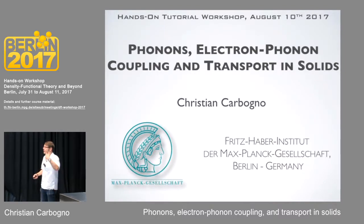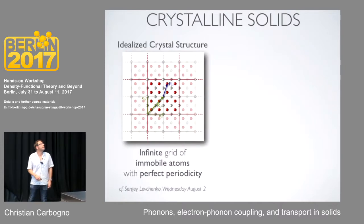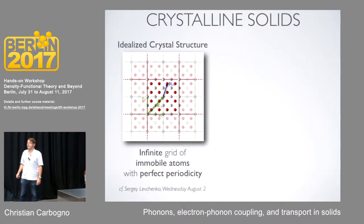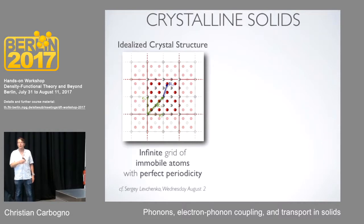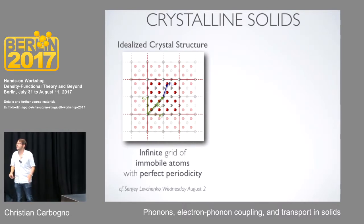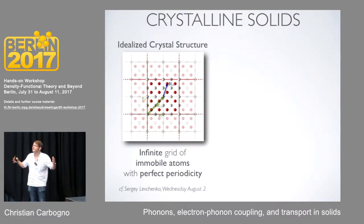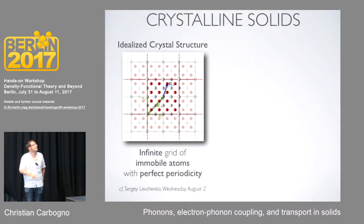Let's go a step back and think about what you've learned the last week or two. When we were talking about crystalline solids, we were always exploiting and thinking about them in an idealized way — thinking about a crystal structure with a unit cell and then perfect lattice vectors that connect to each other, so that you generate a perfectly symmetric infinite array of atoms.